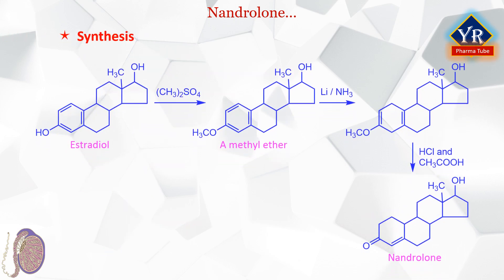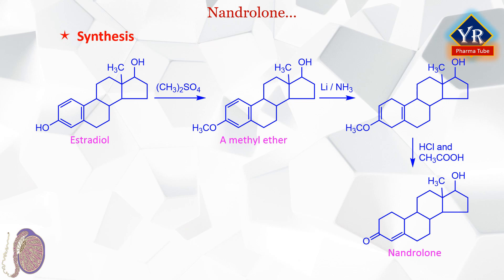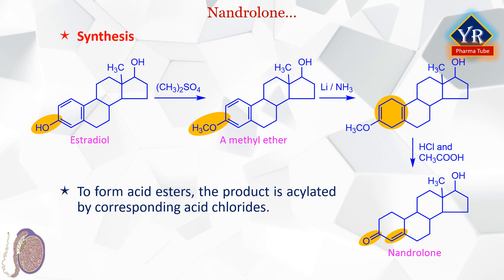Synthesis of nandrolone: Nandrolone is synthesized from estradiol. The phenolic hydroxyl group at C3 of estradiol undergoes methylation by dimethyl sulfate in the presence of sodium hydroxide, forming the corresponding methyl ether. Then the aromatic ring is reduced by lithium in liquid ammonia, which forms an enol ether. Hydrolyzing this compound with a mixture of hydrochloric and acetic acids leads to the formation of a keto group, and simultaneously isomerization of the double bond from C5-10 to position C4-5 gives the desired nandrolone. Upon necessity, the product is acylated by corresponding acid chlorides to obtain nandrolone esters.